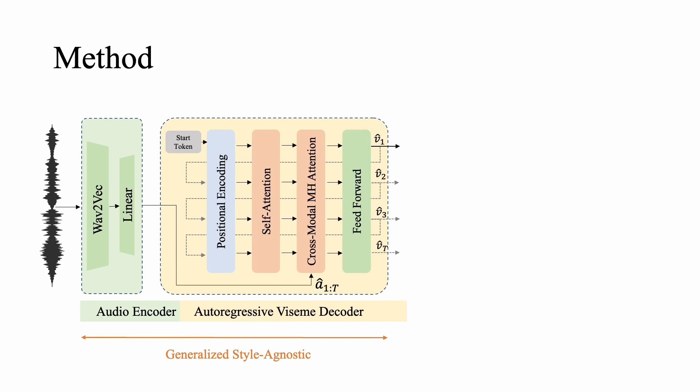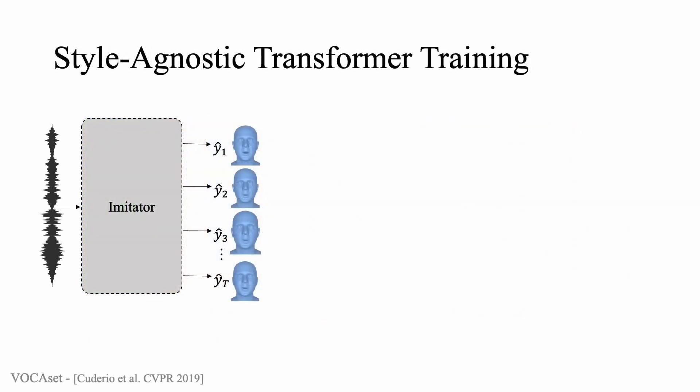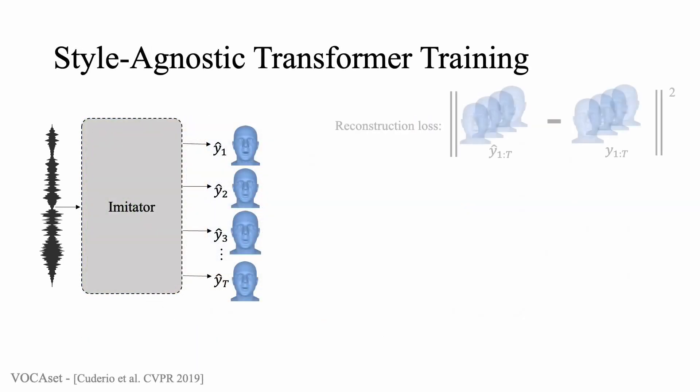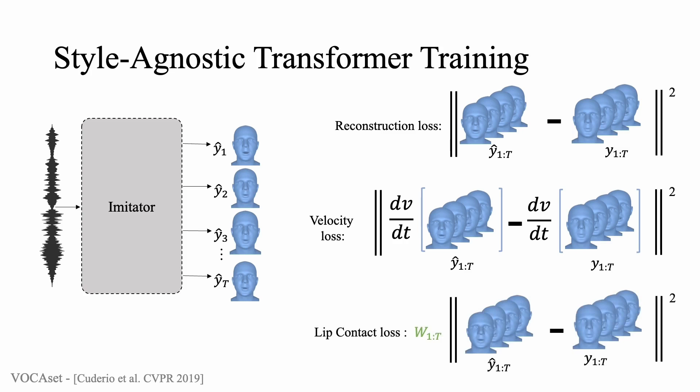These viseme features describe which semantic lip shape should be synthesized for a specific audio input and the previous viseme features. The axial deformation is predicted from these abstract features by a personalized motion decoder, which outputs the 3D facial animation. The style-agnostic transformer is trained on the Voca set using reconstruction and velocity losses. As lip closures are an important indicator of the realism of speech animation, we propose a novel lip closure loss for the bilabial constants M, P, and B.